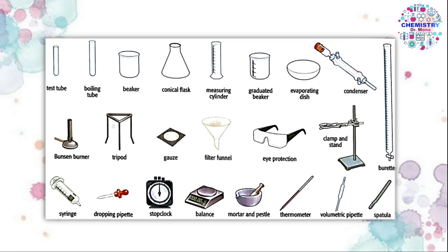The tripod stand is used for heating. We place the Bunsen burner below it, then the gauze on top — it acts like a table. We can heat something like an evaporating dish on top. An evaporating dish is used to evaporate a solvent from a solution; the solid will be left behind. We also have the condenser, used to cool and condense hot vapor into a liquid. The condenser has two openings: the lower opening is always for water in, and the upper opening is always for water out.